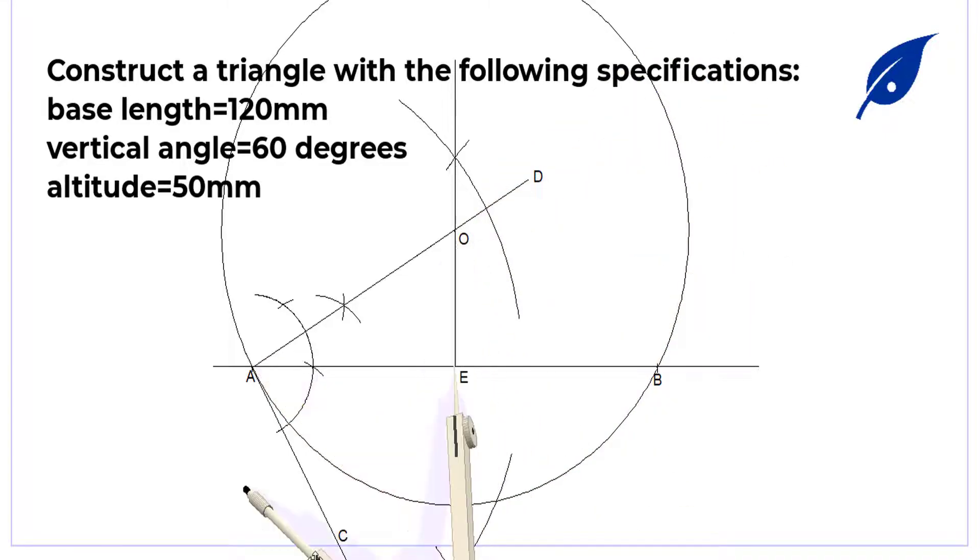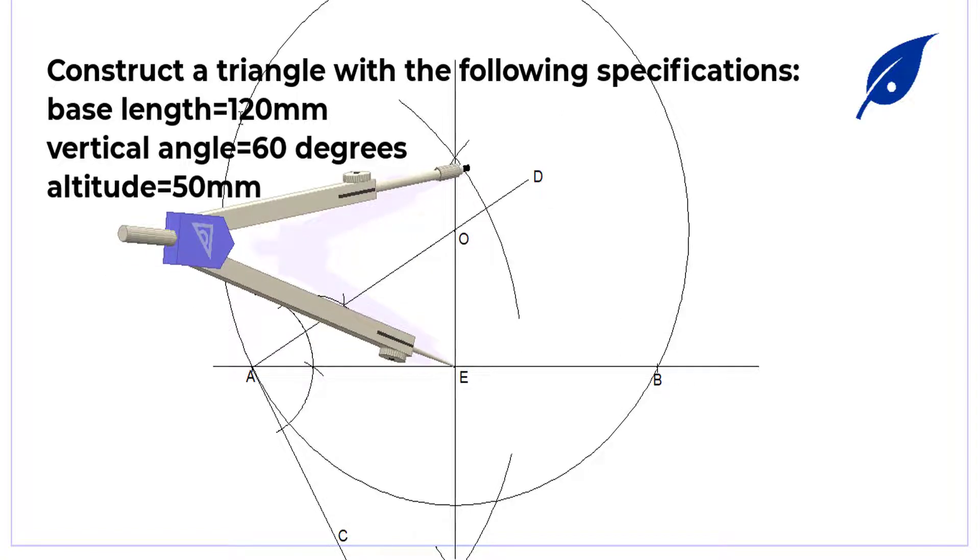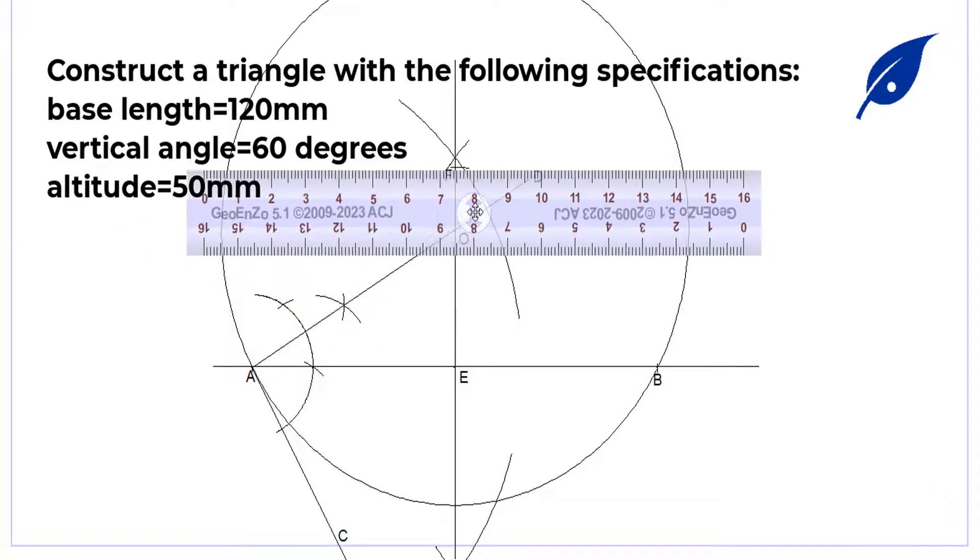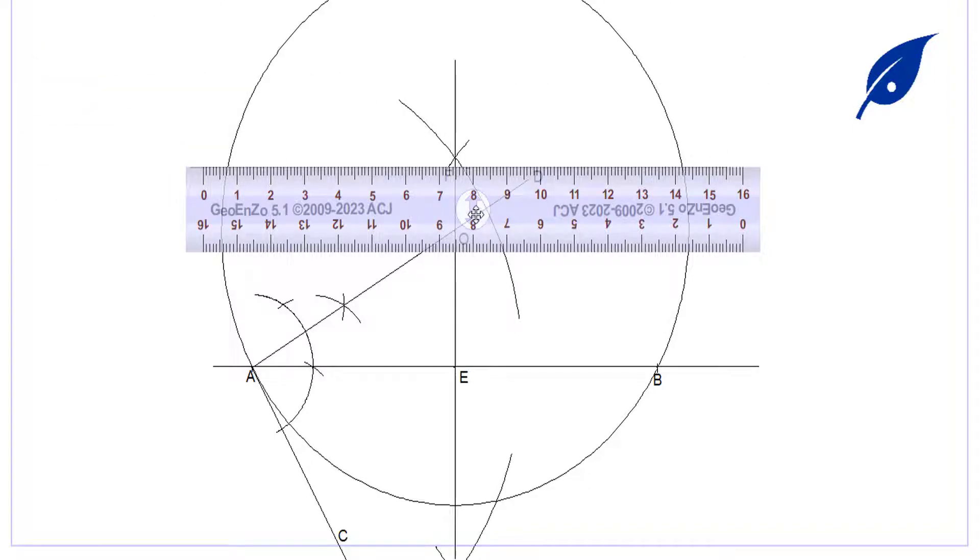Now at this point, we get the altitude from the midpoint of AB. From the point E, get the perpendicular line, which is the altitude. This gives us point F.